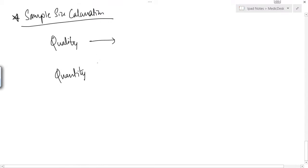For qualitative data, we will find the sample size by n is equal to 4pq upon e square. While here for the quantitative data, you use the formula 4 into sigma square upon e square.